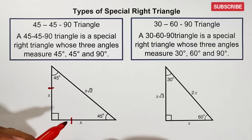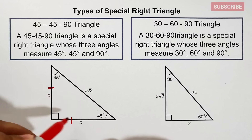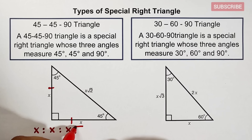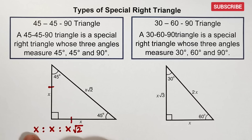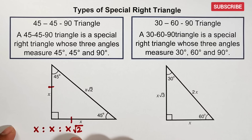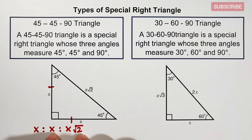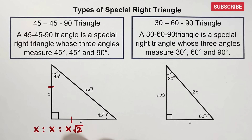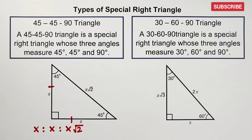The ratio for the sides of the 45-45-90 triangle is x : x : x√2. This ratio is very useful: x represents each leg, and x√2 represents the hypotenuse. To get the hypotenuse, multiply the measurement of one leg by the square root of 2. To get the leg given the hypotenuse, divide the hypotenuse by the square root of 2. Later I will give you examples on how to find the sides of the 45-45-90 special right triangle.